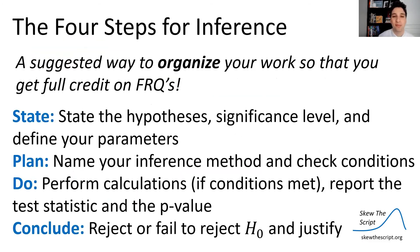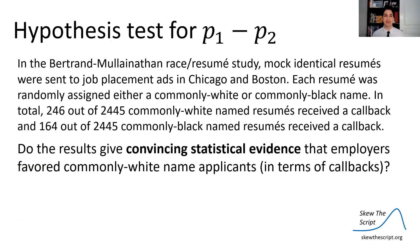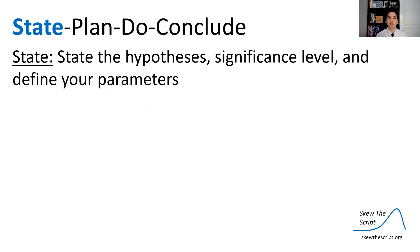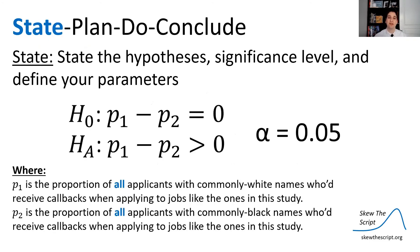So now let's go through the four-step process. This is how you would organize your work on a free response question if you had to do this on the AP exam. So do the results give convincing statistical evidence? That phrase means you know I have to do a hypothesis test. Let's go through the four-step process. First, I have to state my hypotheses, the significance level, and define my parameters. I do that here. Since the significance level wasn't stated in the problem, I'm going to assume 0.05.